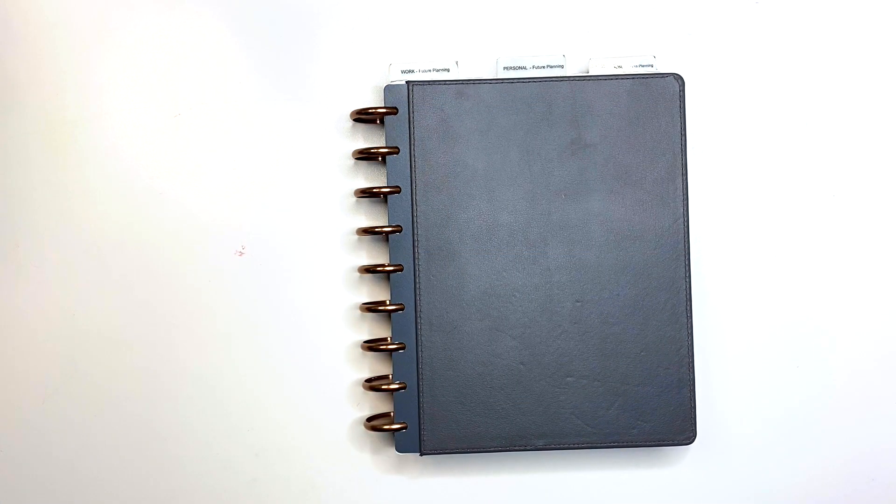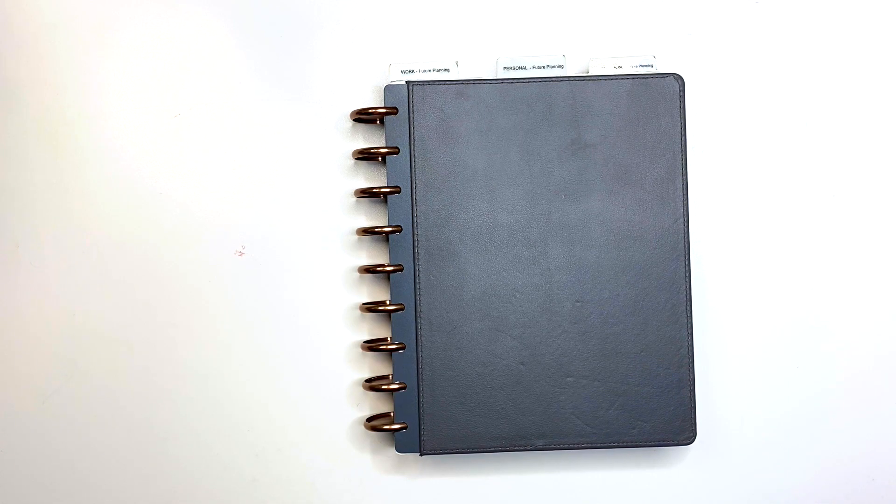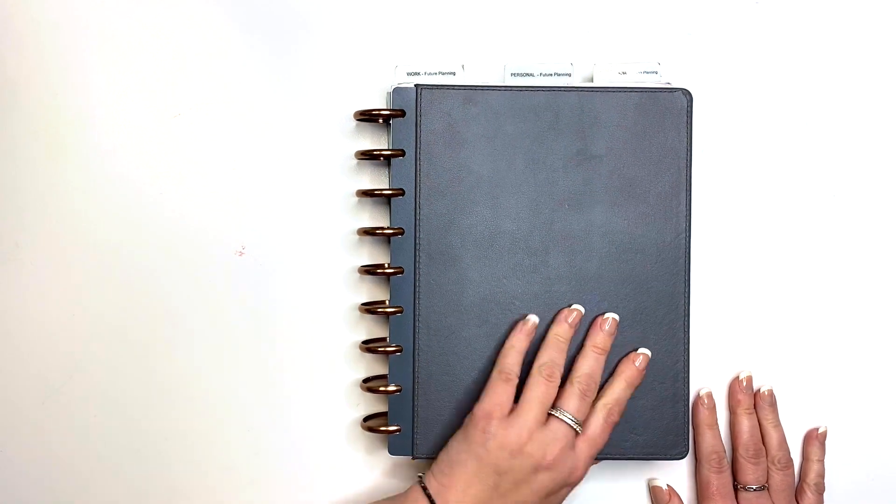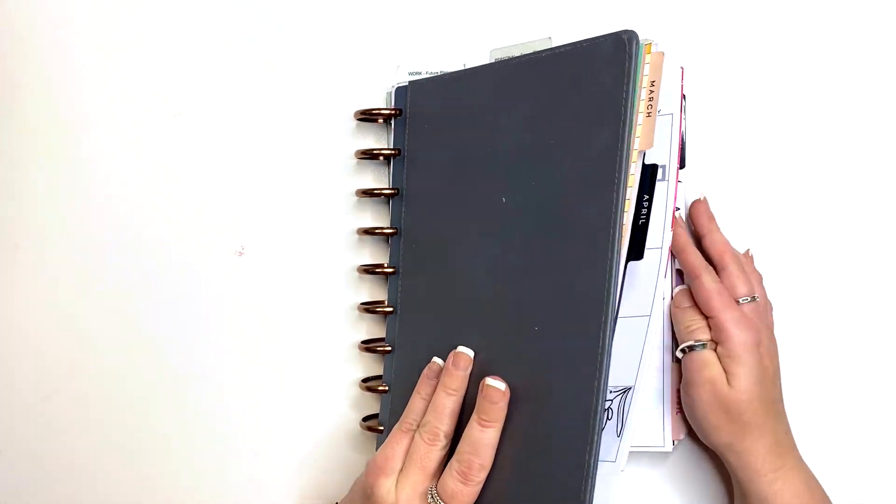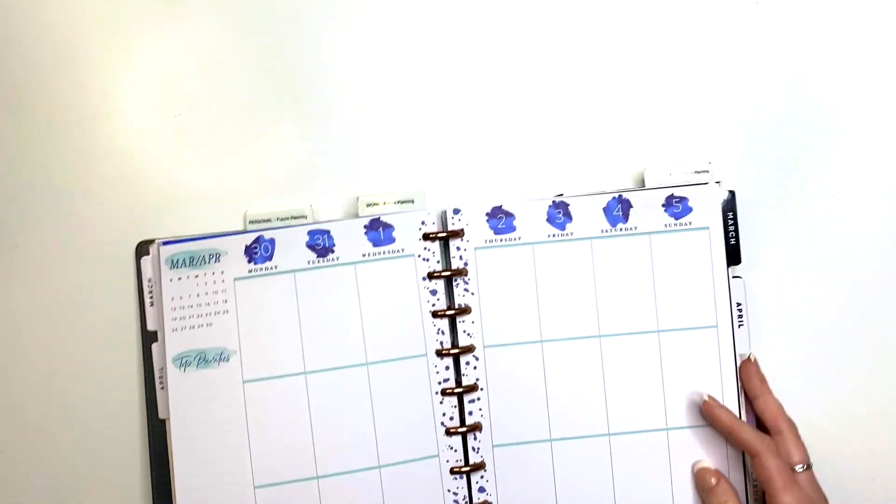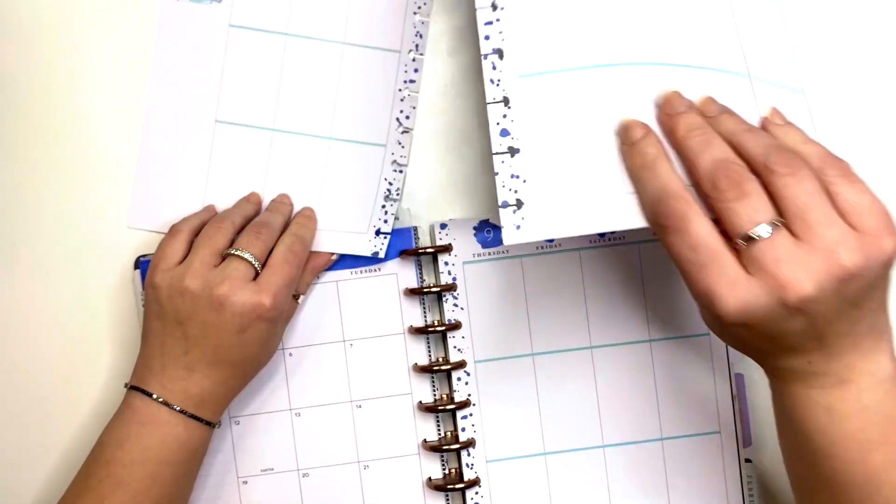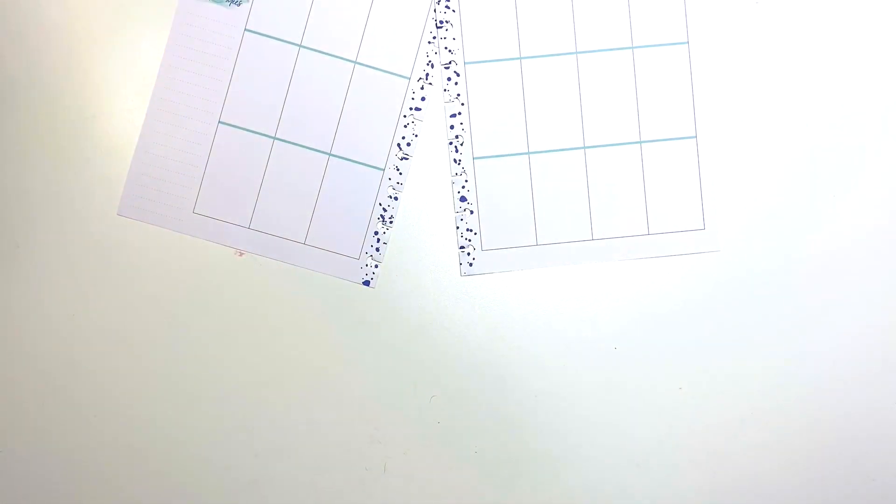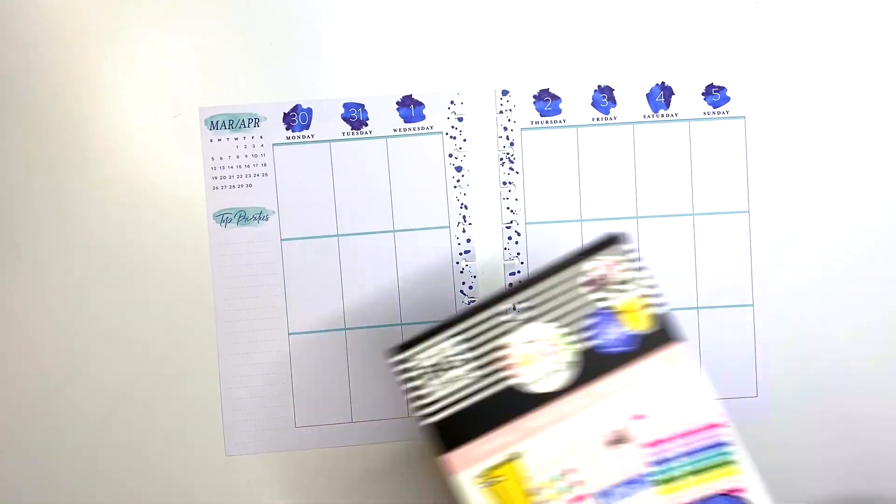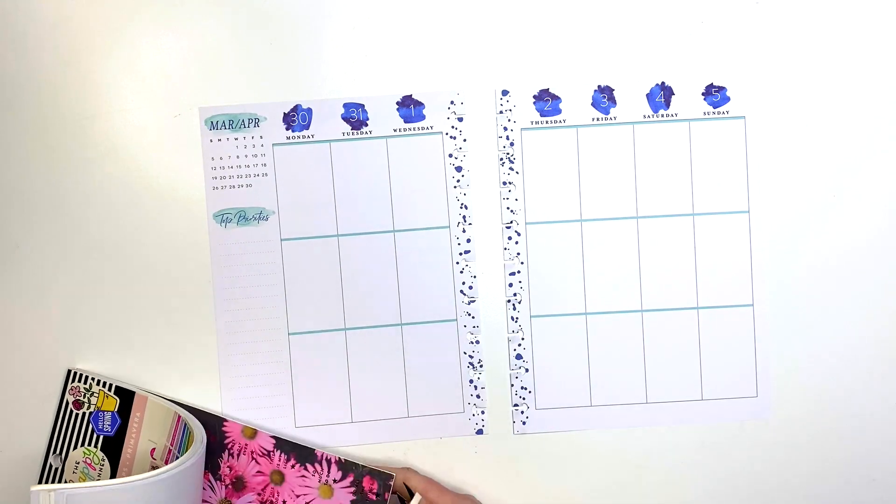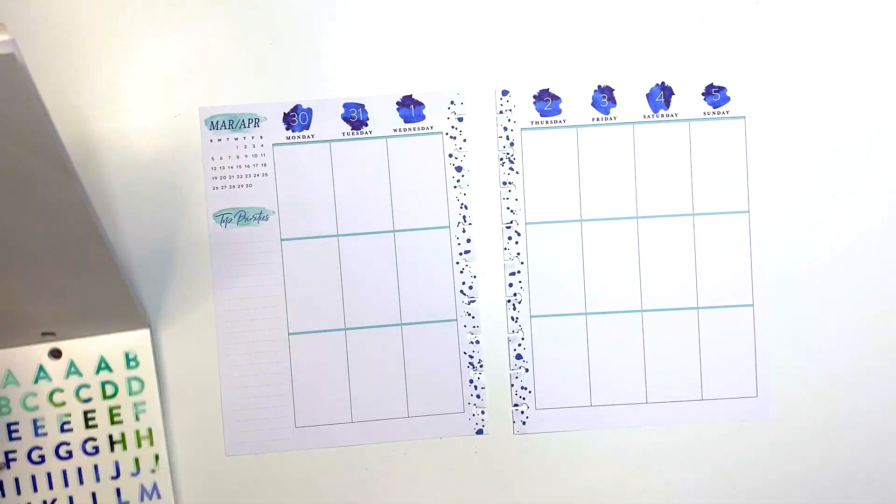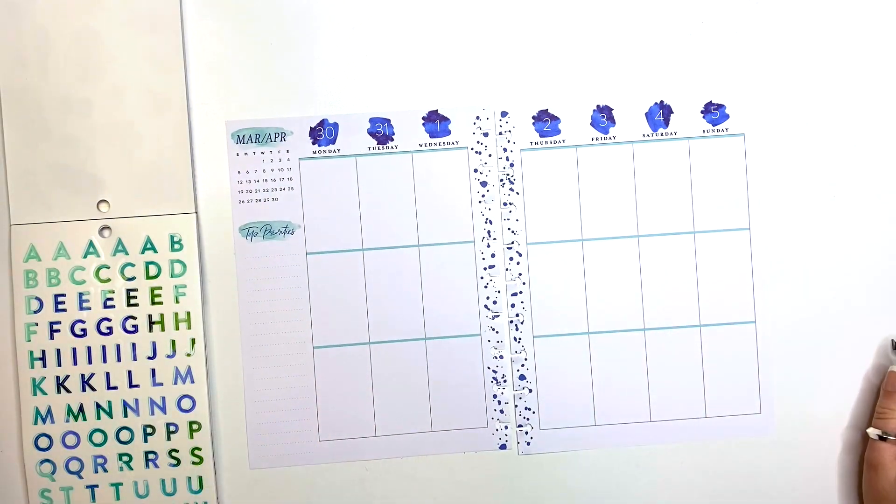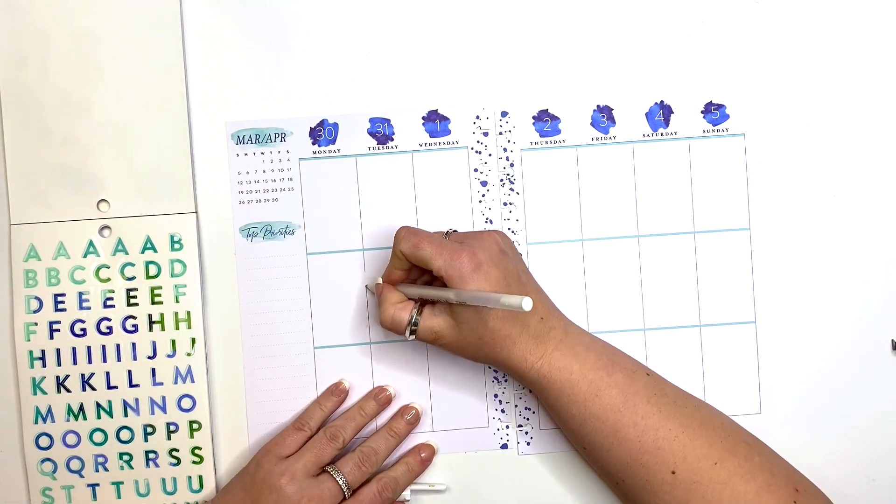Hi my loves, it's Kasha Planarista 101. Today we are going to be planning in my wellness planner for the week of March 30th through the 5th. This week I am participating in a challenge with Miss Raylene from Raylene Creates. I'm going to link her channel down below. The challenge is called You're in Control.